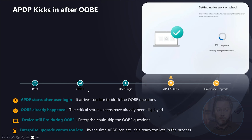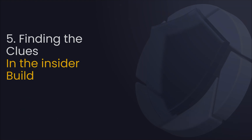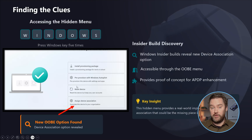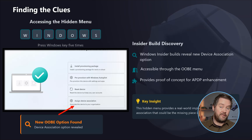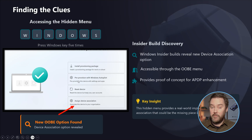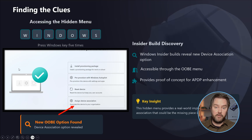Then something else appeared — something that hinted APDP was meant to be more. After noticing device association on that Ignite slide, I installed the latest Windows Insider Preview build and wanted to know if something was hidden inside the out-of-box experience. So I pressed the Windows logo five times during setup — the same button you press when you want to execute autopilot pre-provisioning — and there it was: device association. That was the moment everything started falling into place.